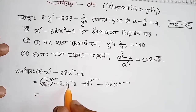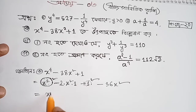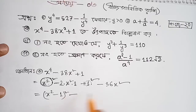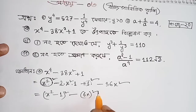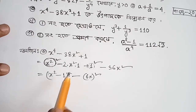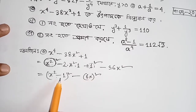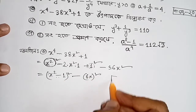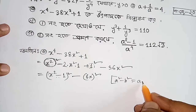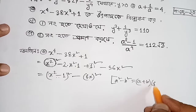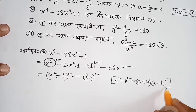A square minus a square minus 2ab plus b square, then 1 into x square minus 36 x square, equals x square times 6x. Using A square minus B square equals A plus B into A minus B.